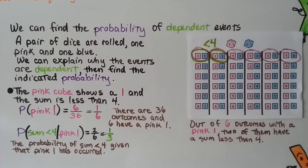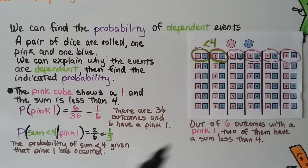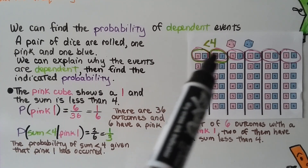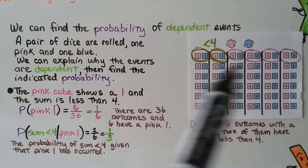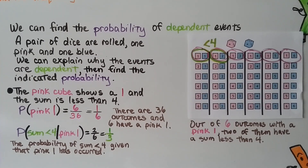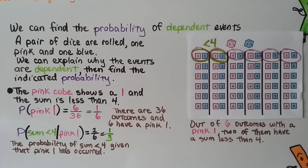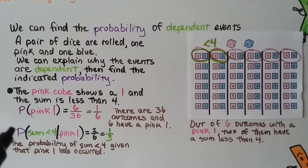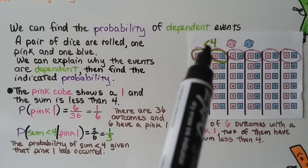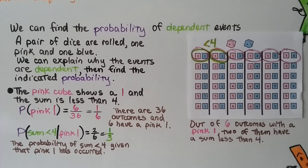The probability of pink showing a one is six out of thirty-six, which reduces to one-sixth. The probability that the sum is less than four, given that the pink one has occurred, would be two of those six, which is one-third. So out of six outcomes where we have a pink one, two of them have a sum less than four.